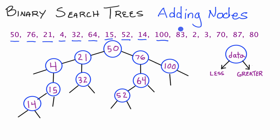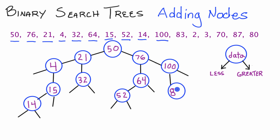Now let's add 83, starting at our root 50. 83 is greater than 50, so we take the right pointer. 83 is greater than 76, so we take the right pointer again. 83 is less than 100, and 100's left pointer doesn't point to anything, so we add node 83 there. We'll mark 83 off the list.